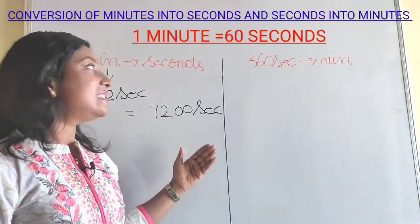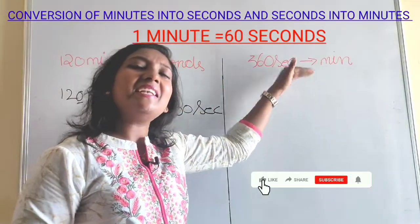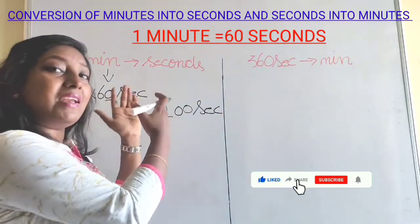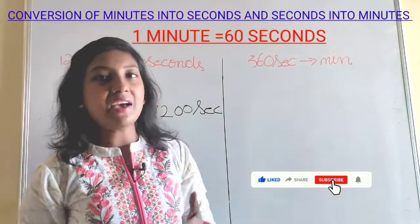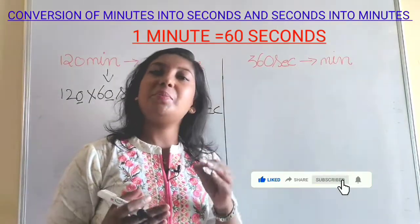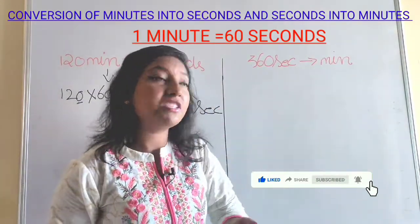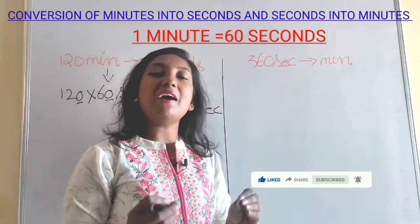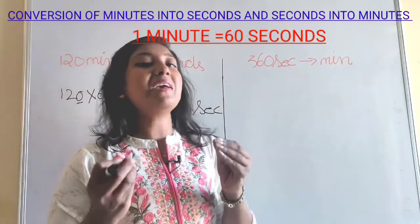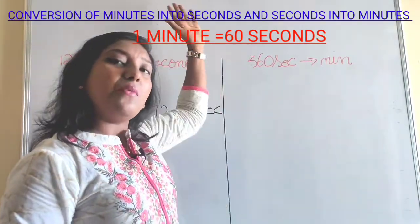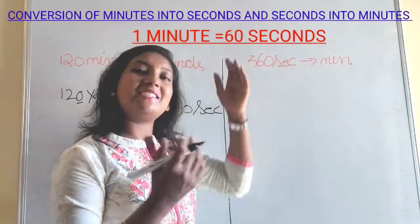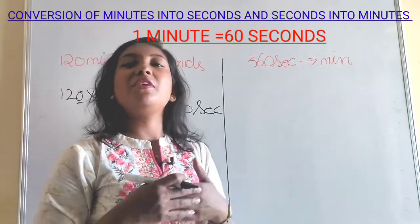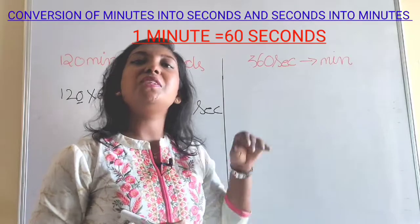Now let's see how to convert seconds into minutes. When converting minutes into seconds we did multiplication, but when converting seconds into minutes we have to divide by 60, because 1 minute equals 60 seconds. So we are going to do division.